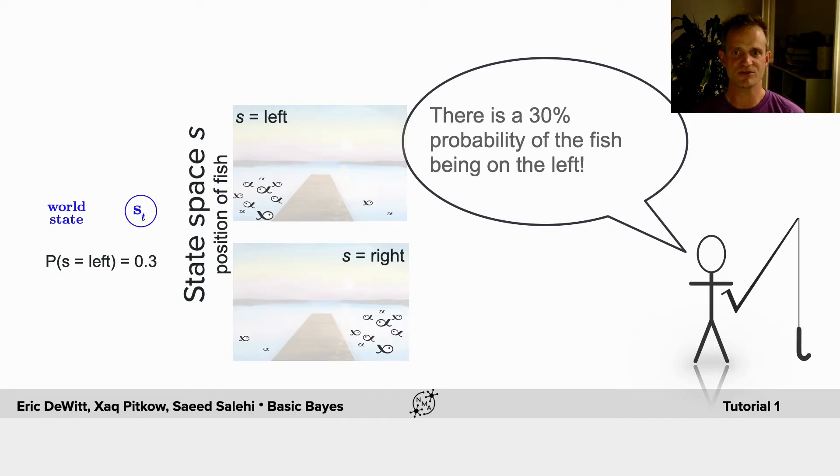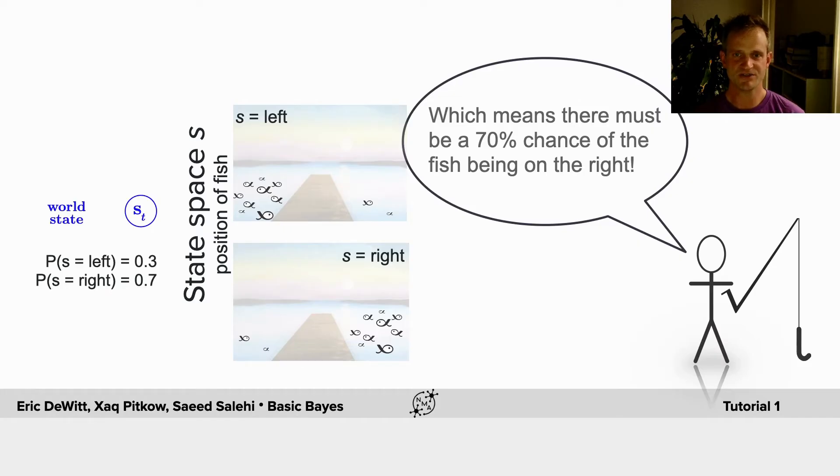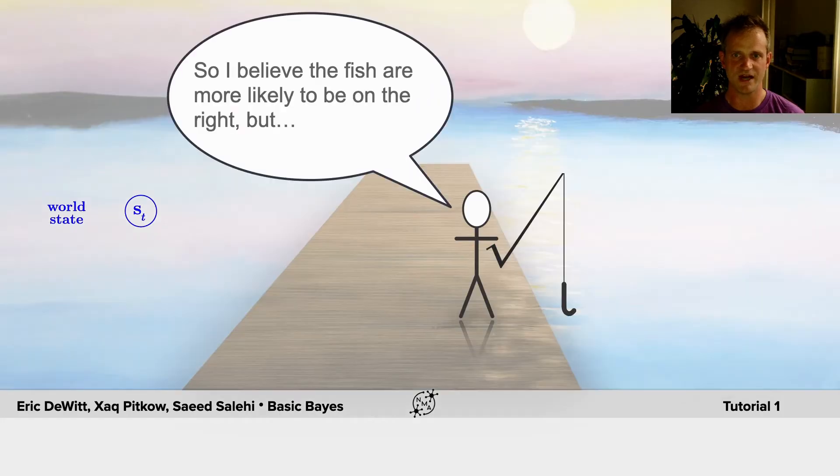Let's say there's a 30% probability of the fish being on the left. Well, because they can only be on the left or the right, that means there's a 70% probability of the fish being on the right.